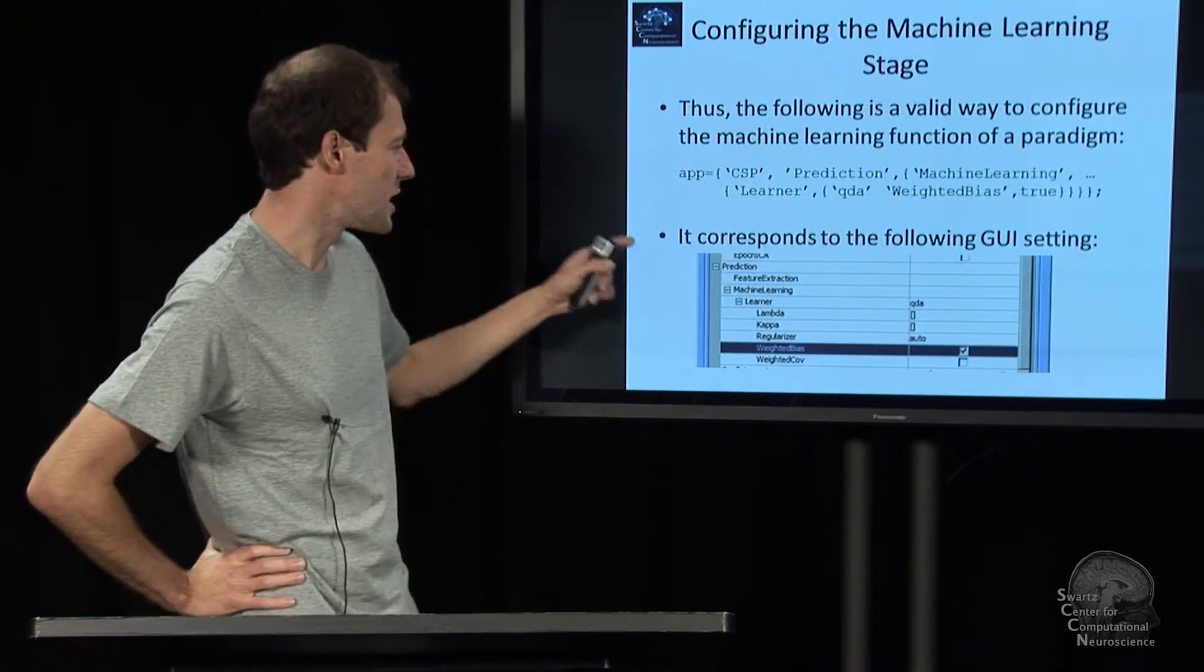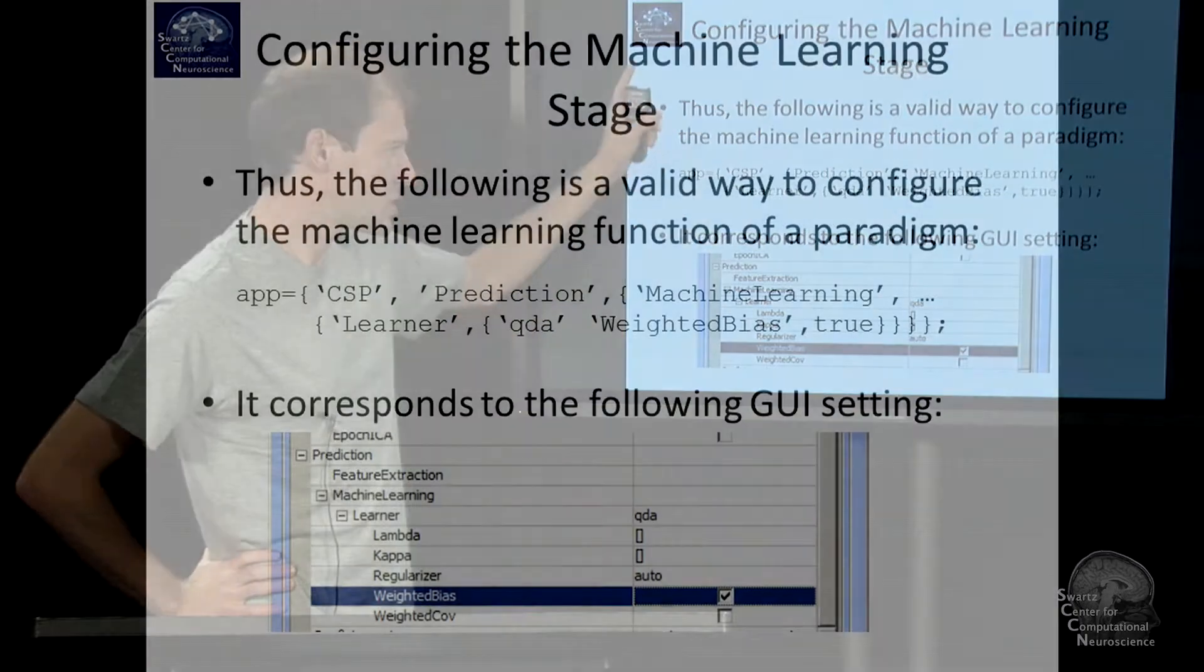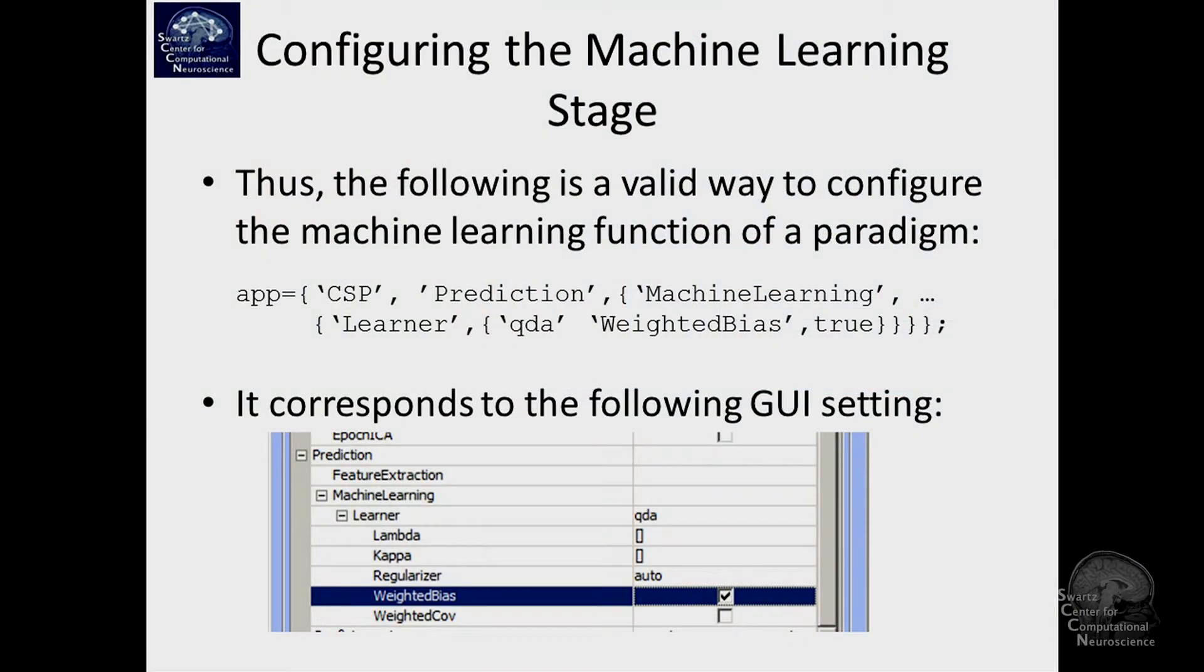Here's an example. You see a particular paradigm might have a prediction area department, and it has machine learning specifically, and a learner function. It's set to QDA, and this thing happens to have a parameter that is here set to true, the weighted bias one.